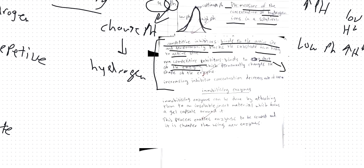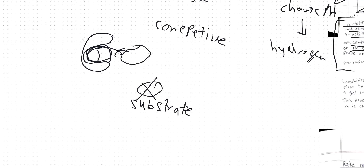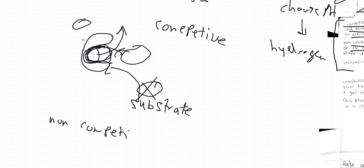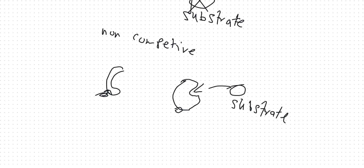Non-competitive inhibitors bind to the enzyme itself and change the shape of the active site. This causes permanent changes, whereas competitive inhibitors cause temporary inhibition. Competitive inhibitors can leave the active site so that the substrate can bind, but this is not the case for non-competitive inhibitors. Non-competitive inhibitors bind to the enzyme, causing it to change shape so it's no longer complementary to the substrate. The substrate can no longer bind to the active site, and this change is permanent — you can't undo the change.